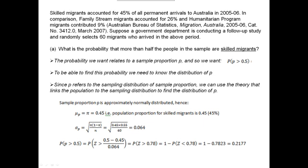Skilled migrants accounted for 45% of all permanent arrivals to Australia in 2005-2006. In comparison, Family Stream migrants accounted for 26% and Humanitarian Program migrants contributed 9%. Suppose a government department is conducting a follow-up study and randomly selects 60 migrants who arrived in the period above.